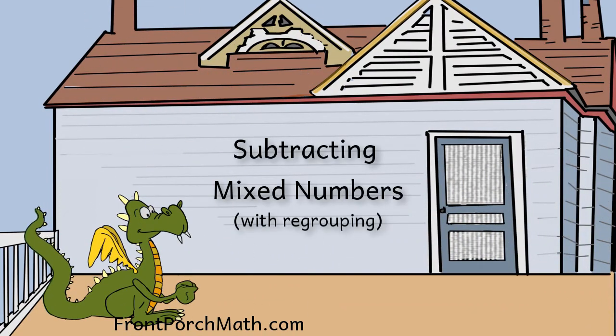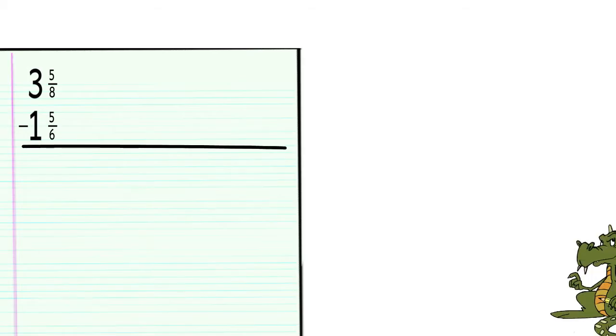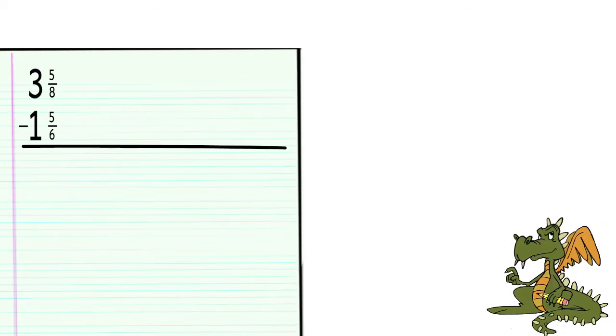We're going to look at the example 3 and 5 eighths minus 1 and 5 sixths. While we are doing the problem on paper, we will show each step to the right using the fraction tiles so we can visualize what's going on.